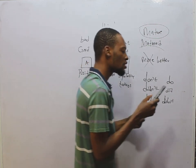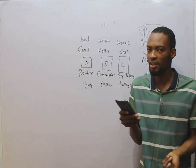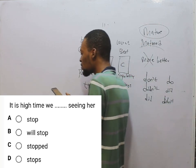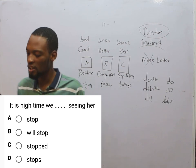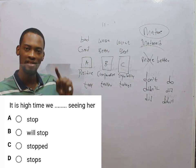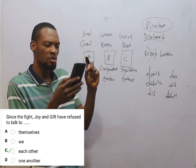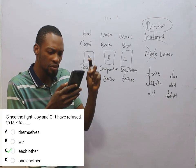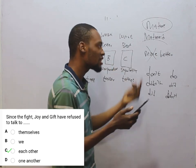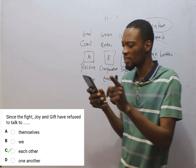It is high time without seeing her. As explained earlier, it is high time should be followed by past tense, so it is high time we stopped is correct. Since the fight, Joy and Gift have refused to talk to each other — as I said, two persons use each other, so each other best completes the sentence.